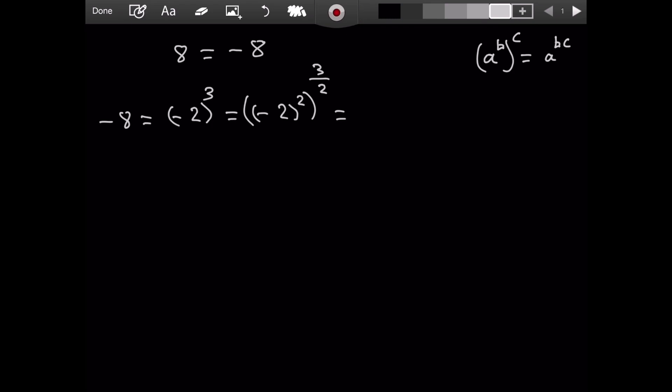Now, continuing from this, let's simplify the first parentheses. That is going to be negative 2 squared. That is simply negative 2 times negative 2, which is 4. And it is raised to the power of 3 over 2.